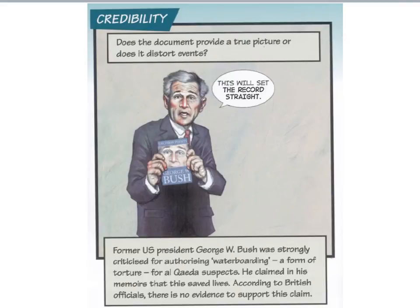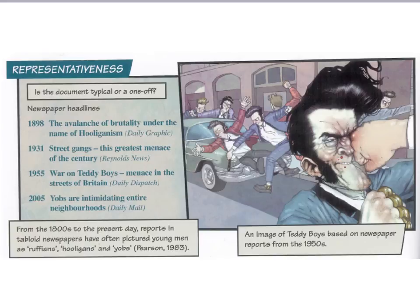Credibility is about the truthfulness of the contents of the document. Questions to ascertain credibility include: Is the document believable? Was the author being sincere when they wrote it? And has the document been distorted for either intended or unintended reasons? For representativeness, sociologists should ask whether the evidence provided in the document is typical or a one-off. When looking at historical documents particularly, we must ask whether the surviving documents are typical of those that were destroyed or lost.